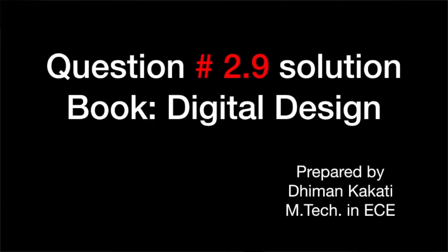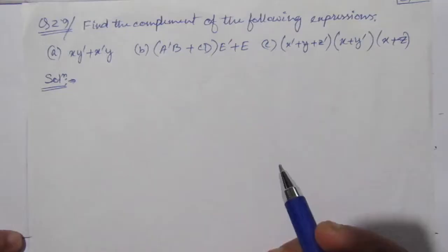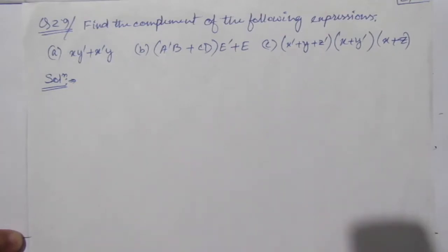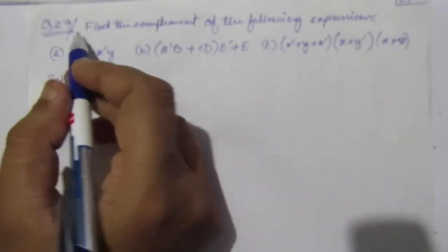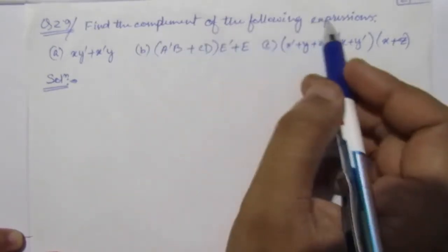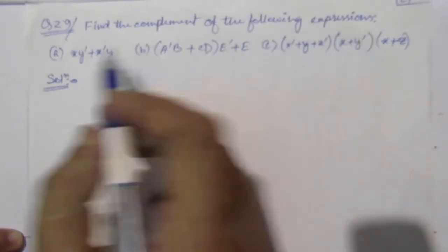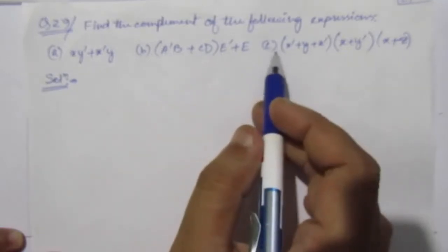Dear students, I welcome you all to this problem solution series in digital electronics. I am solving the problems from the book Digital Design by Maurice Mano and Michael Ciletti. In this video, I am solving problem number 2.9 from chapter number 2. The problem is: find the complement of the following expressions. We are given three expressions A, B, and C.